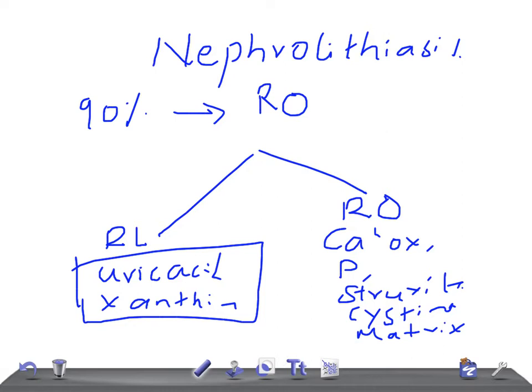Remember, a renal or ureteric stone overlies the spine on a lateral view, while a gallstone found in the gallbladder does not overlie the spine on a lateral view. Let me repeat: renal or ureteric stones overlie the spine on lateral view, while gallstones do not overlie the spine on lateral view.